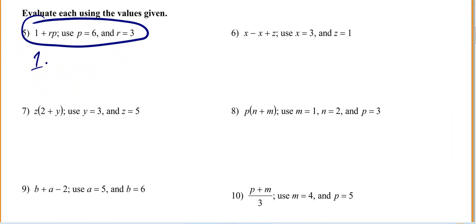Here you've got 1 plus R. We know R is 3, and we're going to multiply R times P, which is 6. So we're just plugging in the numbers. That's why it's called substitution. 3 times 6 is 18, so this becomes 1 plus 18, which is 19.